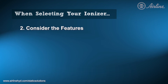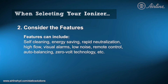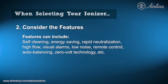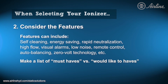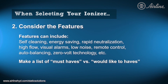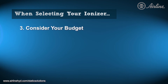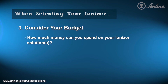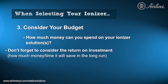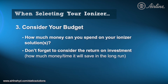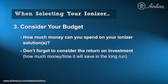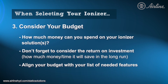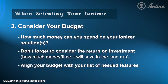The next thing to consider is the features you'd like your ionizer to have. Does it need to have energy savings? Does it need to be low in noise? Make a list of the features you must have and a list of the features you would like to have. Then consider your budget. How much money can you spend on your ionizing solution? Also consider your return on investment. Creating a budget goes hand in hand with what we previously discussed, because you may need to make compromises on features in order to meet your budget.